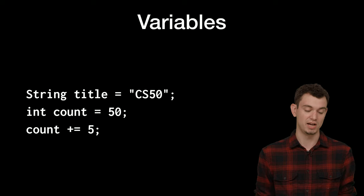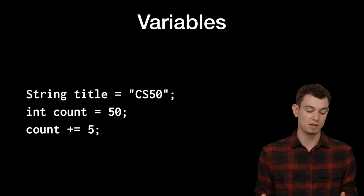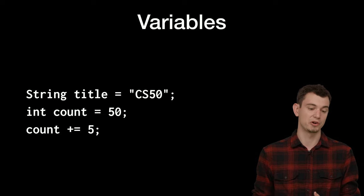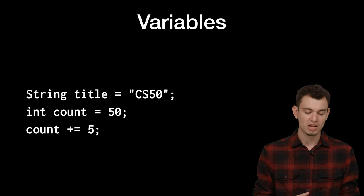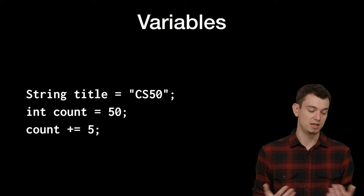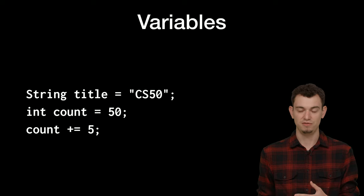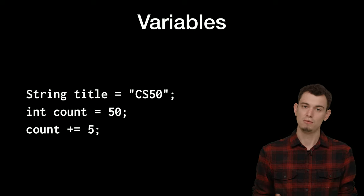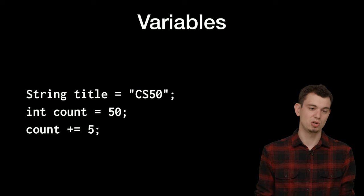Here are our first few lines of Java code, where we're just going to initialize a few variables. In the first line, we're creating a new variable whose type is String — notice that in Java that's capitalized — then an equal sign and the value of that string. The next line, we're creating an int and setting its value equal to 50. We can change that value using the same syntax as C. Also notice that every line ends with a semicolon.